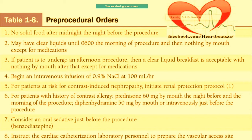What do you do when considering contrast-induced nephropathy? If the patient's serum creatinine is borderline or slightly raised, you should follow what is called a renal protection protocol — we will discuss that in coming sessions. If someone has had an allergy to contrast, you can give prednisone 60 mg by mouth the night before and the morning of the procedure — so at least twice.